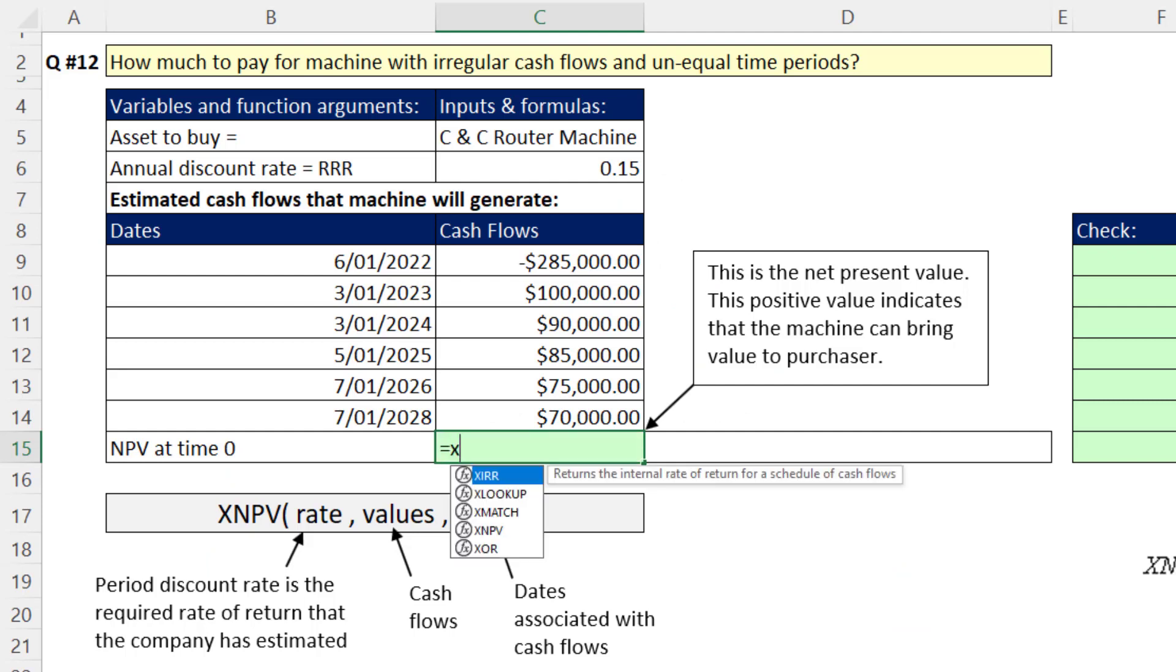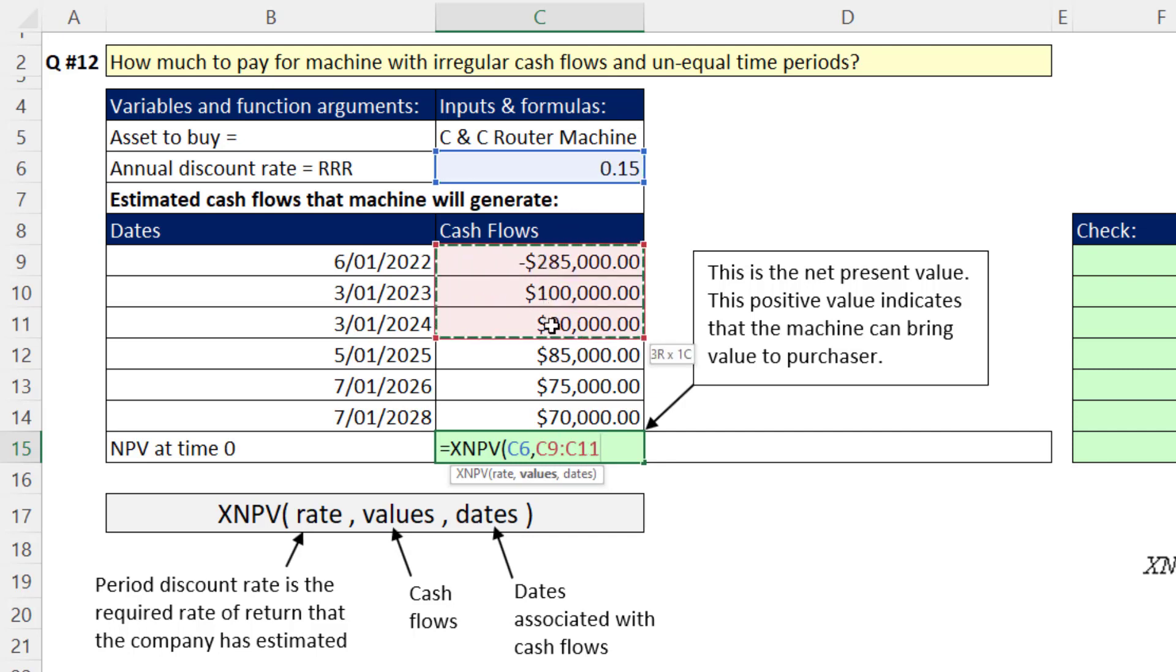So we can use XNPV. There's our required rate of return, comma, the values. And look at this - here's the other difference between NPV and XNPV. We can put the cost at time 0 directly into the cash flows, comma, and then we put our dates.